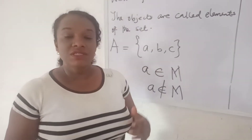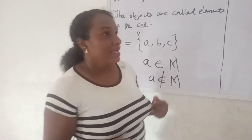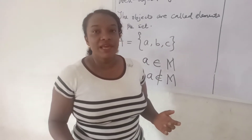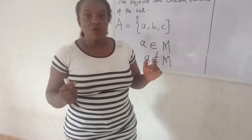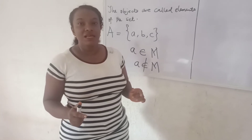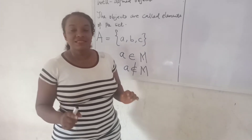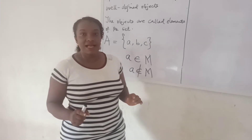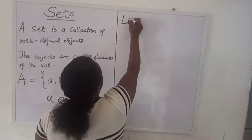Now let's look at how to specify sets. There are two ways of specifying sets: one is by listing, and two is by set builder notation. Now let's look at listing.